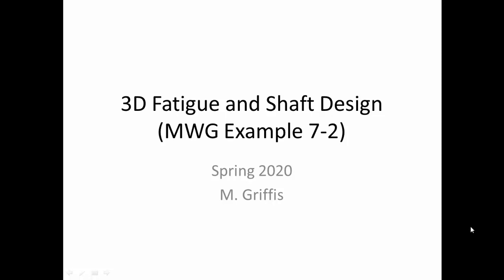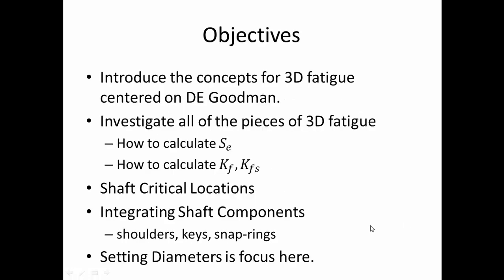Hello, today I'd like to talk about three-dimensional fatigue and shaft design. I'd like to go through my tweaks on Example 7.2 from the Shigley book. We want to introduce Distortion Energy Goodman as our three-dimensional theory for fatigue, look at how we calculate endurance strength and fatigue stress concentration factors KF and KFS, examine shaft critical locations, and understand the impact of shoulders, keys, and snap rings. The main goal is to design shaft diameters.